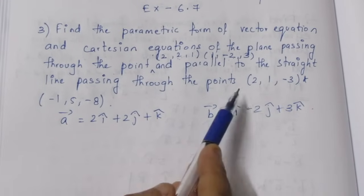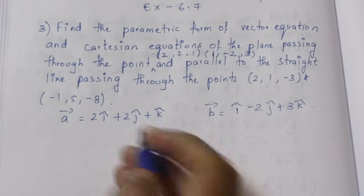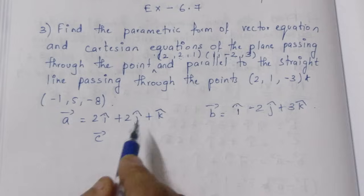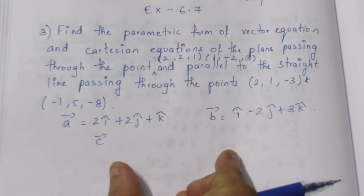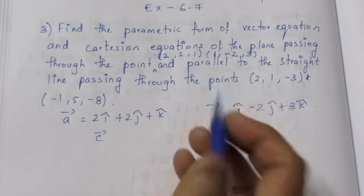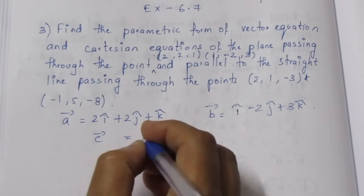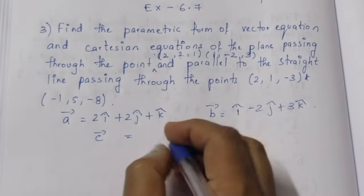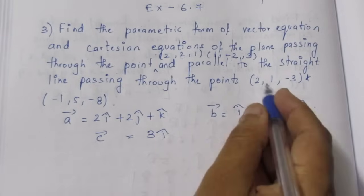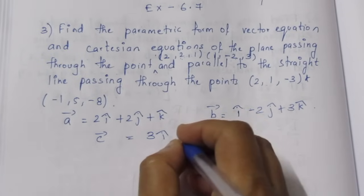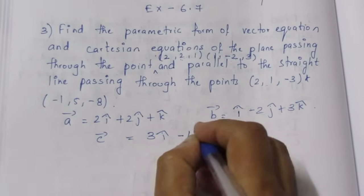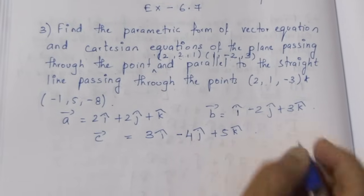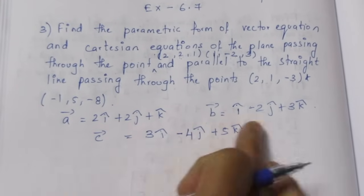For the parallel direction, we need to find two vectors. The first vector and the second vector give us the direction of the line. The second vector component includes plus 5k cap.